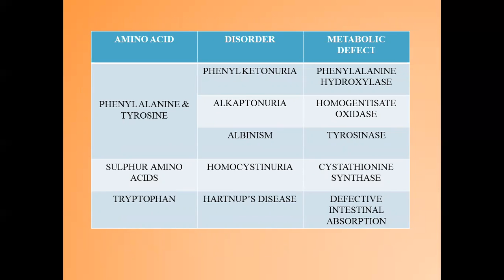Now some disorders related to amino acids. Phenylalanine and tyrosine disorders: phenylketonuria, in which the metabolic defect is due to phenylalanine hydroxylase. In alkaptonuria, it is due to homogentisate oxidase. In albinism, it is due to tyrosinase. In sulfur amino acid, the disorder is homocystinuria, due to cystathionine synthase. And in tryptophan, the disorder is Hartnup disease, due to defective intestinal absorption.